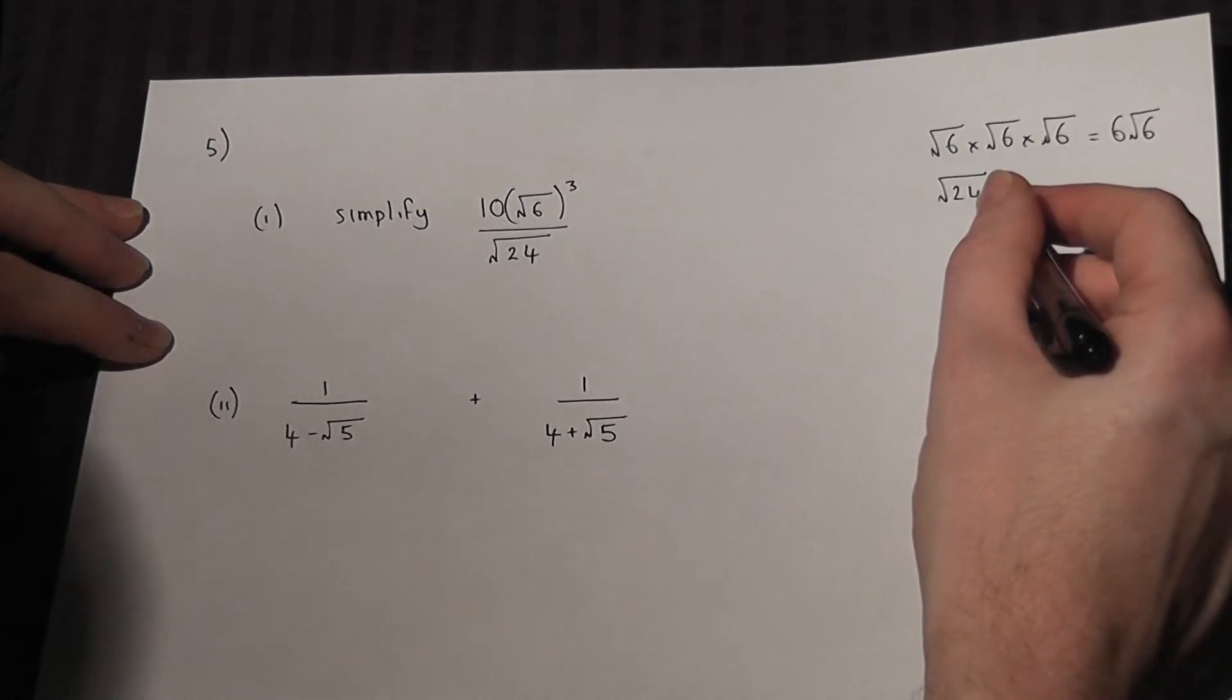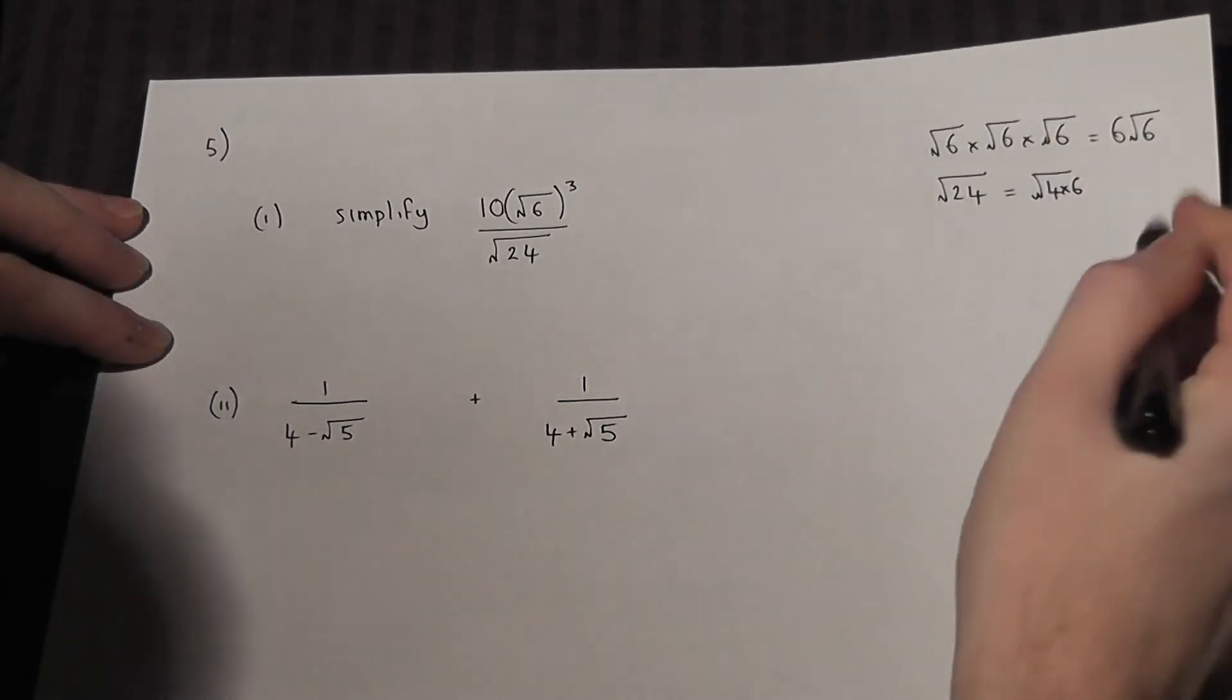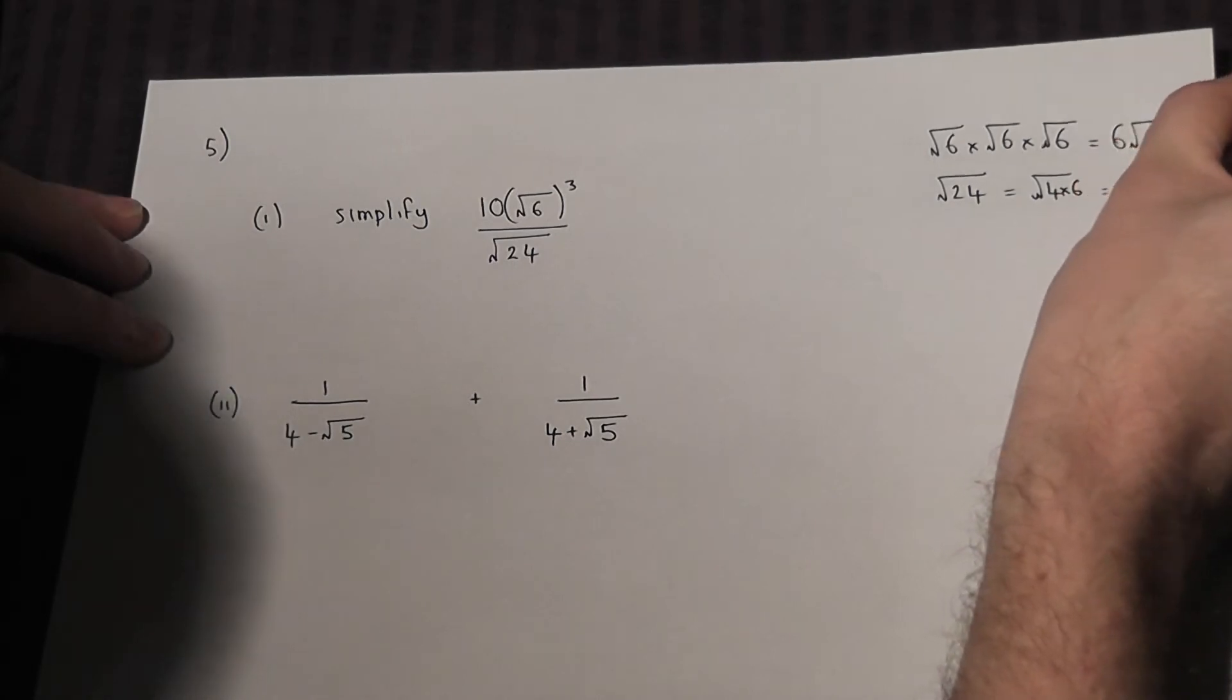It's got a square factor. In this case it is root of 4 times 6. Now root of 4 is 2, so it's 2 root 6.